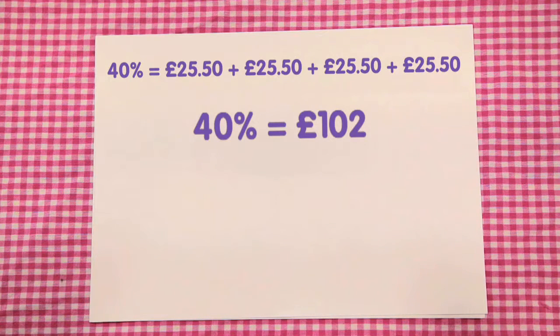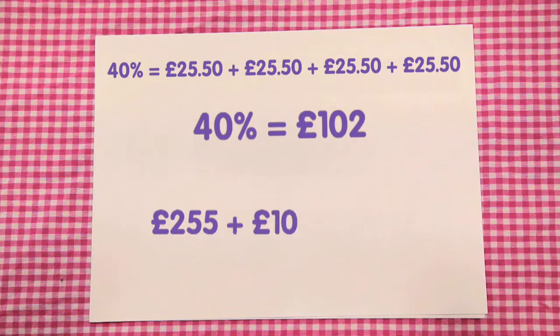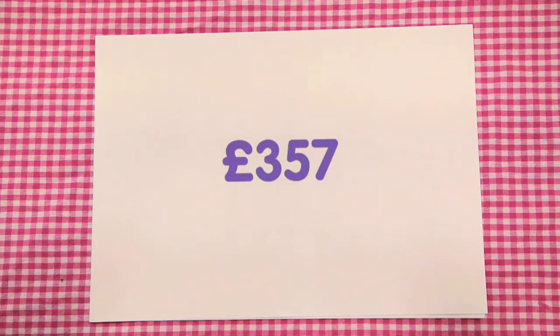Add the original value of the bike to the increased value to get the new price of the bike. £255 plus £102 equals £357. So the value of the bike is now £357.